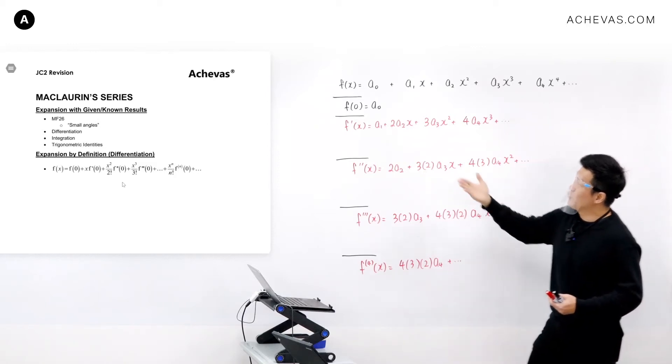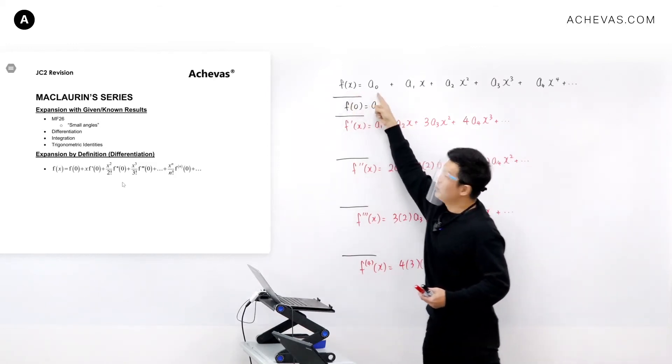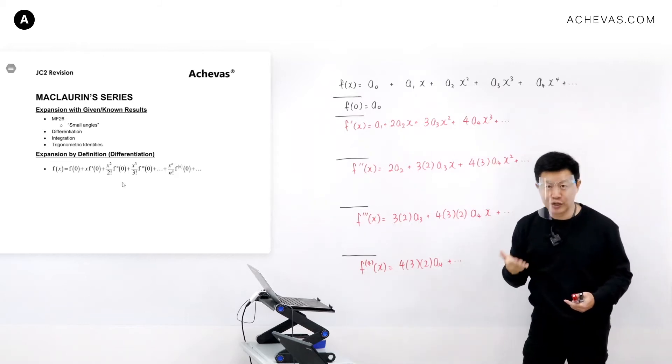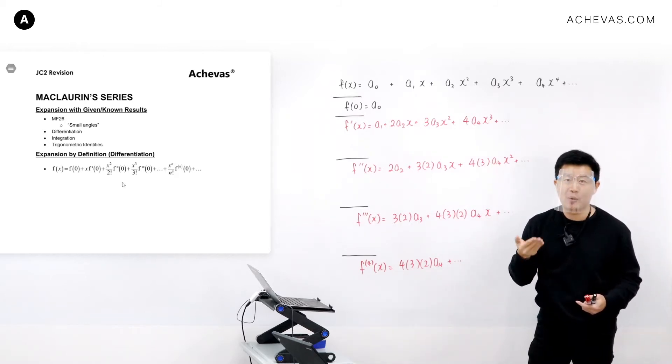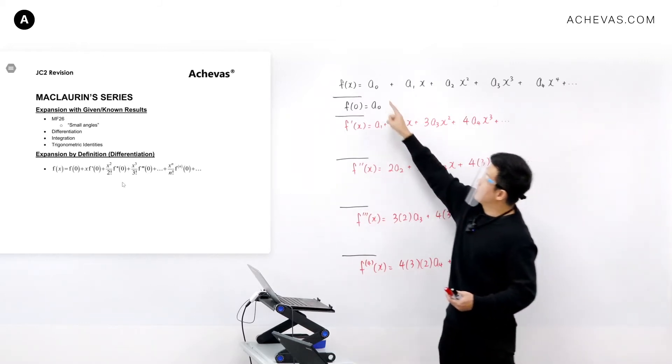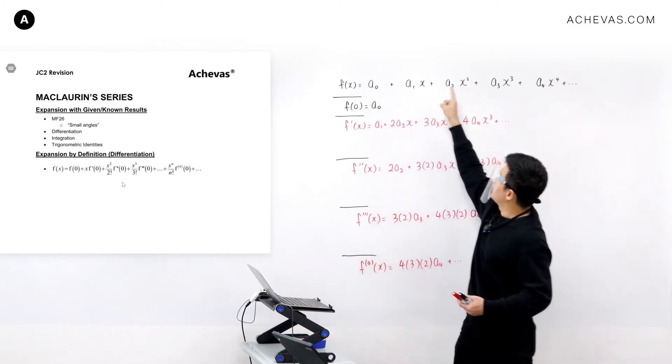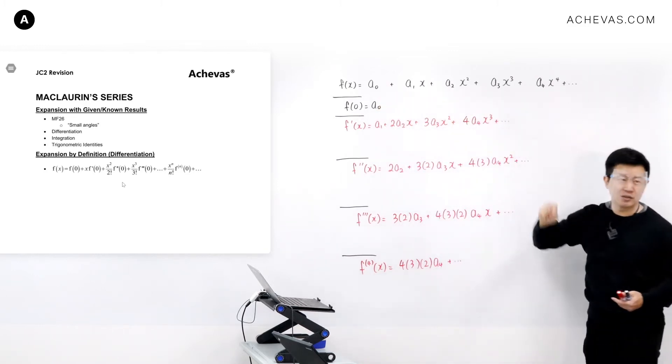The aim is to try to re-express a function into an infinite polynomial. I'm working on x to the power of 0, x to the power of 1, x to the power of 2, all the way until infinity.